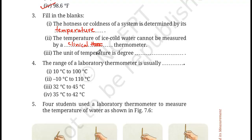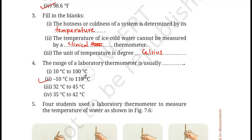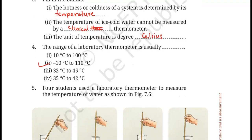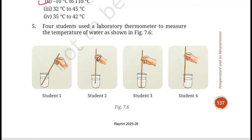The unit of temperature is degree Celsius — that is the commonly used unit. Had the question asked for the SI unit of temperature, the answer would be Kelvin. Now, the range of a laboratory thermometer is usually minus 10 degree Celsius to 110 degree Celsius.